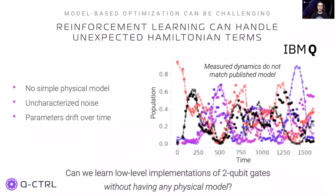One could try to improve the gates by starting from a physical model of the system, but this heavily relies on having an accurate model. For platforms like superconducting qubits, this is not always the case. This is particularly true for multi-qubit devices, where unknown Hamiltonian terms strongly affect the dynamics of the system. In the figure, you can see the results of a simple experiment where we apply the two qubit drive and follow the time evolution of the population of the four basic states. The dashed lines are computed from a simulation, and the dots are the experimental data. Clearly, the simulation is quite far from the experiment.